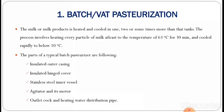The first type is batch or vat pasteurization. The milk or milk product is heated and cooled in one, two, or sometimes more tanks. The process involves heating every particle of milk to at least 63°C for 30 minutes and then cooling rapidly to below 10°C. The parts of a typical batch pasteurizer include: insulated outer casing, insulated hinged cover, stainless steel inner vessel, agitator and its motor, outlet cork, and heating water distribution pipe.